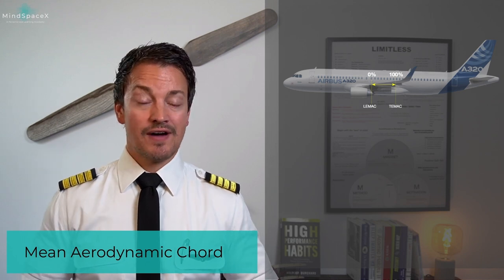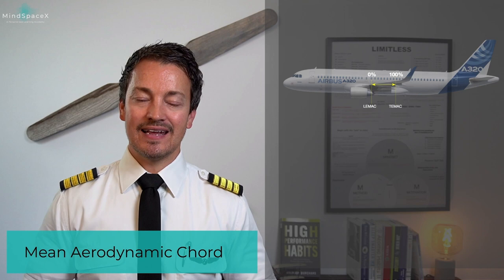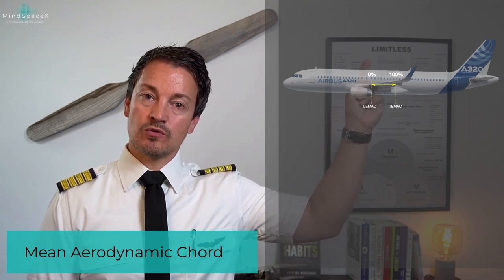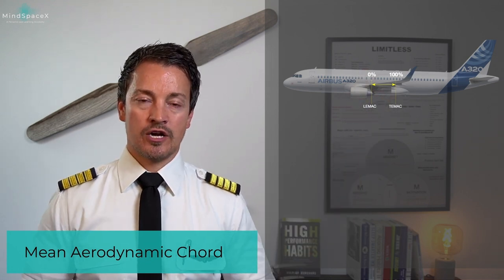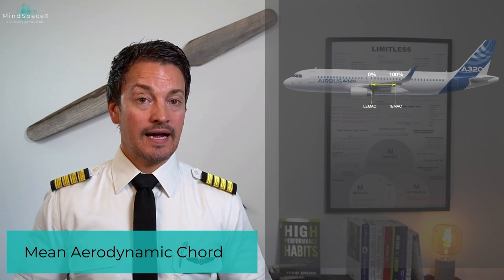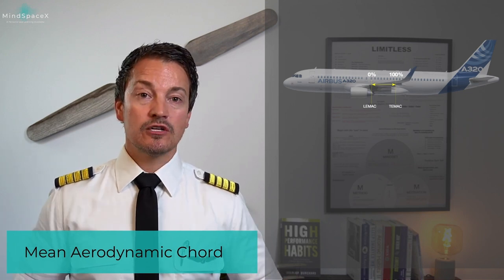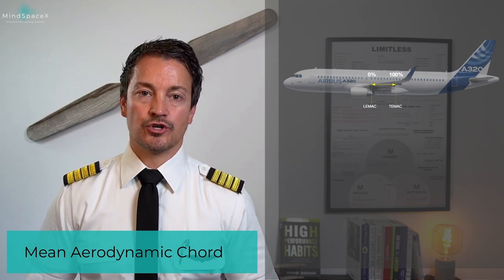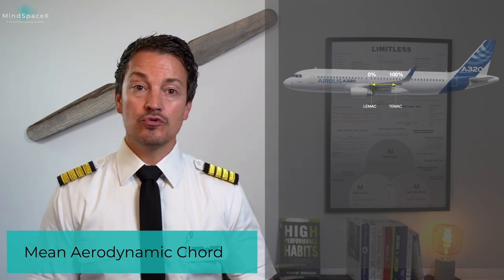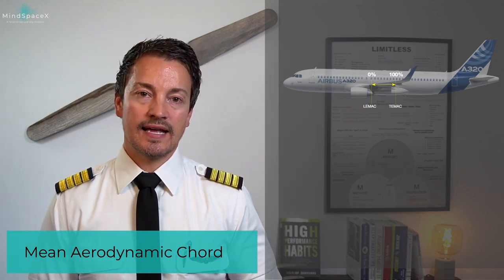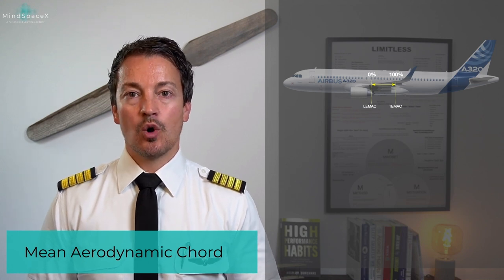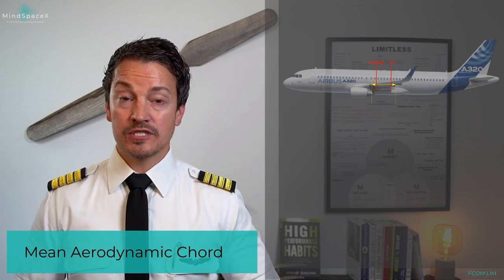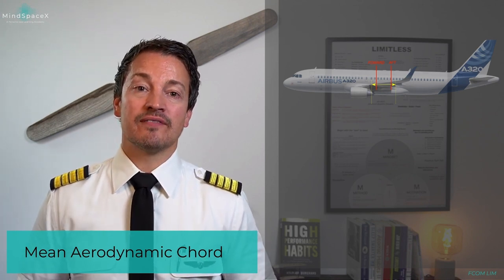We express the CG as a percentage by knowing the length of the mean aerodynamic chord line. Regardless of how long that MAC line is, the leading edge of the MAC is always 0% and the aft end is always 100%. So whether the MAC line is 2 meters or 8 meters long, it always represents 100%. The manufacturer, through wind tunnel testing and calculations, has established the maximum forward and maximum aft MAC percentage that the CG must remain within at all times.